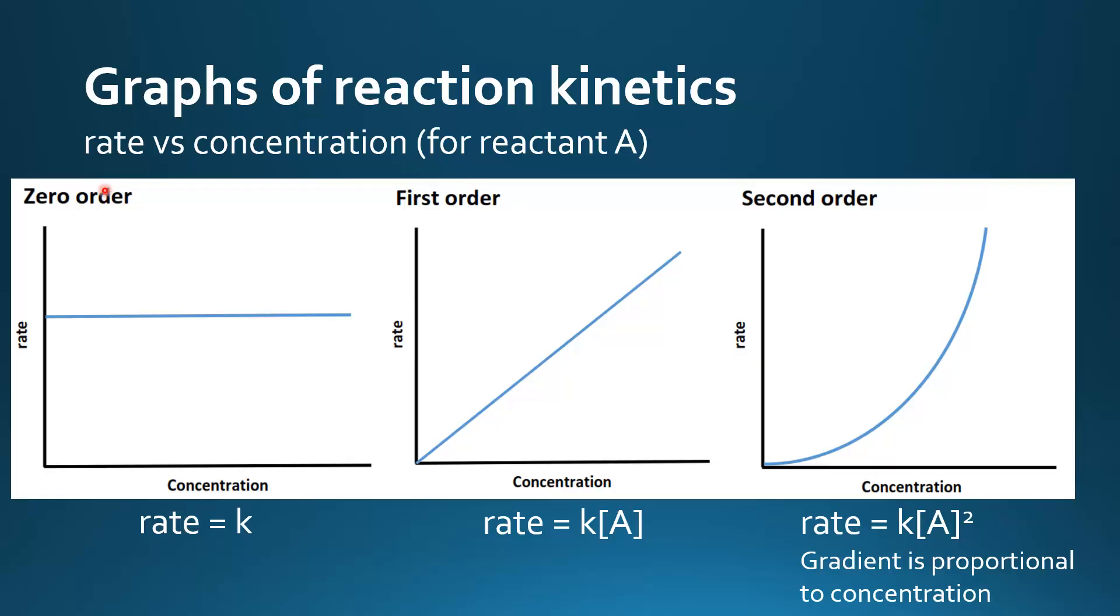So we'll start with a zero-order reaction, that's where the concentration of A does not affect the rate of reaction. So the rate concentration graph is a horizontal line.